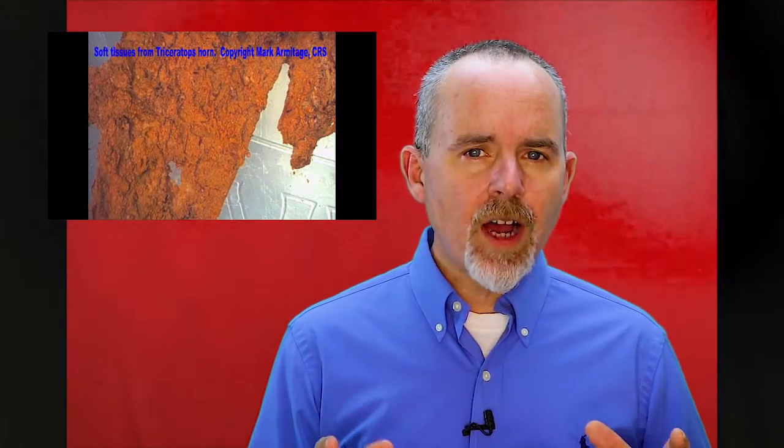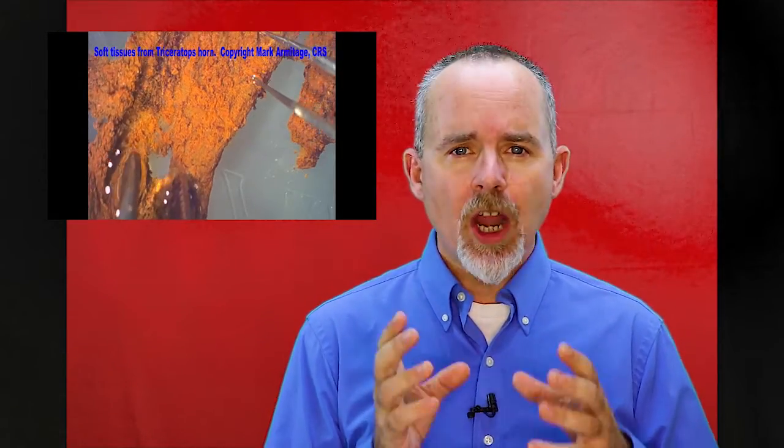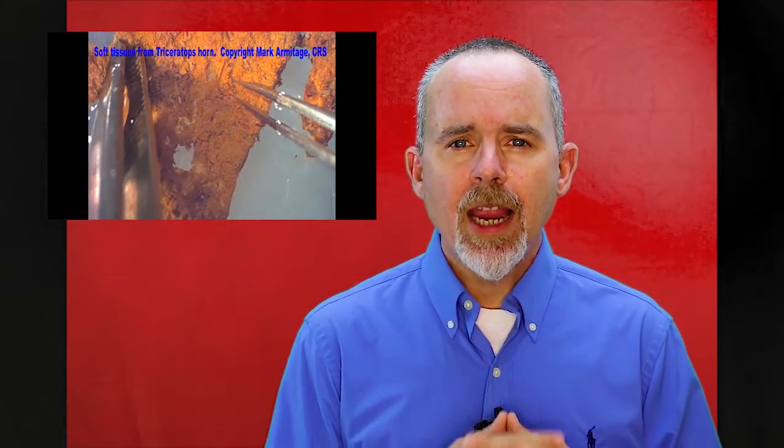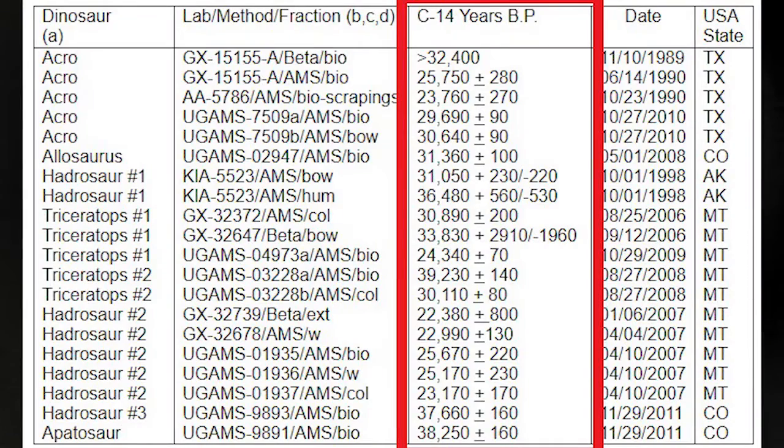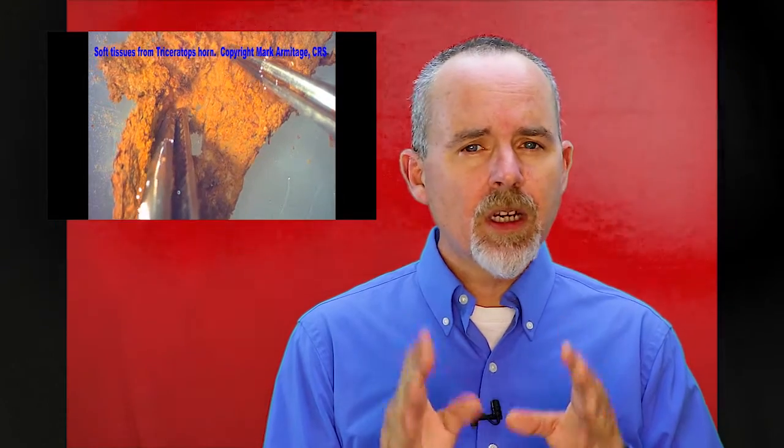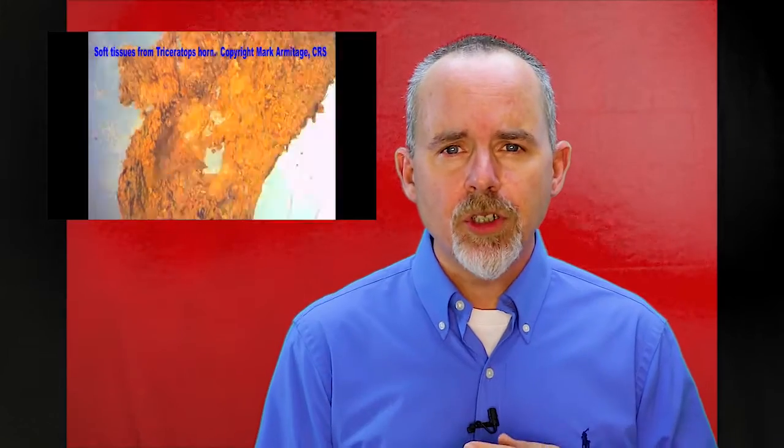You see, dinosaur fossils have soft tissue contained within them. Not all fossils do, but a lot of them are yielding soft tissue. And this soft tissue is what contains that radiocarbon material. And this radiocarbon material has been taken to labs, and the dates that are coming back are consistent. They are between 22,000 and 34,000 years old.